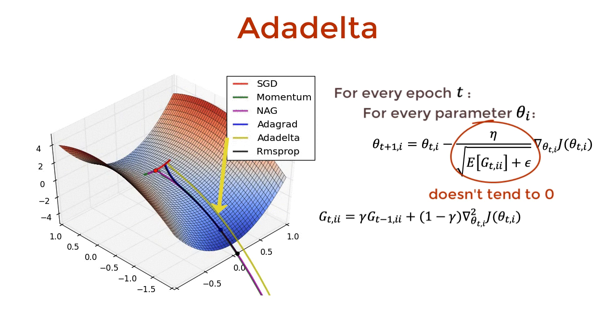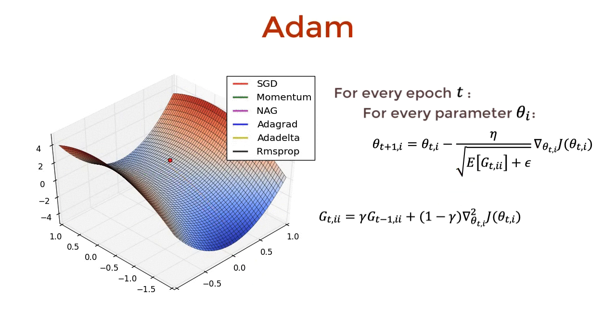Cool, so we actually have learning rate updates for every single parameter. Well, if this is the case, why not just go even further and have momentum updates for every parameter? And this is what Adam does.